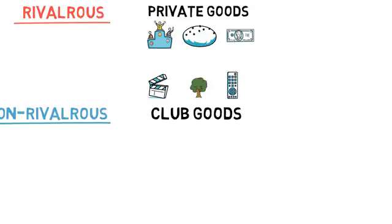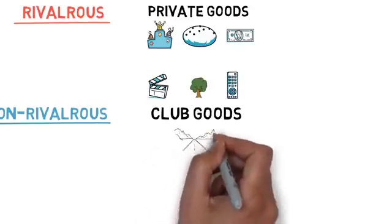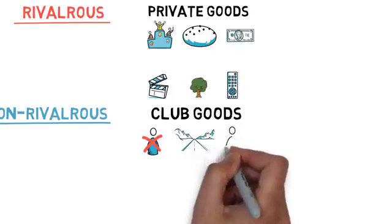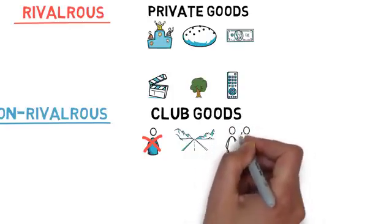Another example is a non-congested toll road which excludes people who don't want to pay for it, but it's not a rival good since one person's use of the road does not reduce its usefulness for the others.